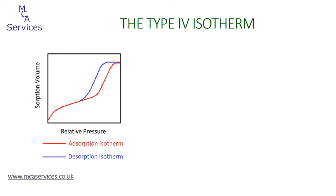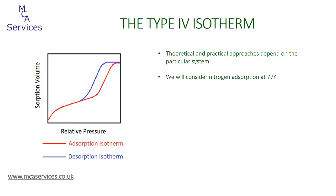In this presentation we'll look at the origin of isotherm hysteresis in more detail and its influence on interpreting isotherms. Here we have a model isotherm which can be classified as a type 4 adsorption isotherm with type H2B hysteresis to the desorption isotherm. Discussion of isotherms is heavily dependent on the precise system being applied. We will consider nitrogen adsorption isotherms collected at 77 Kelvin, although this can also be applied to other systems.